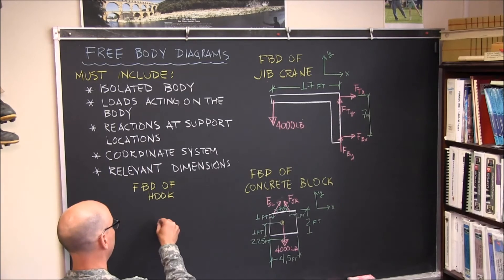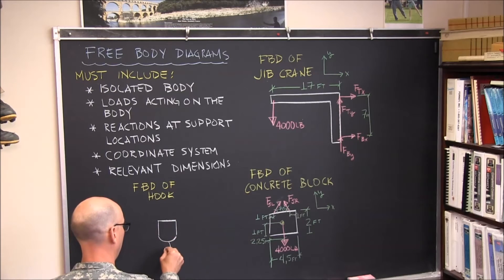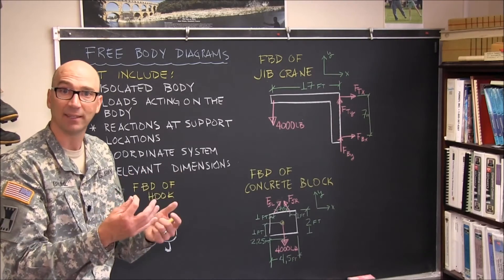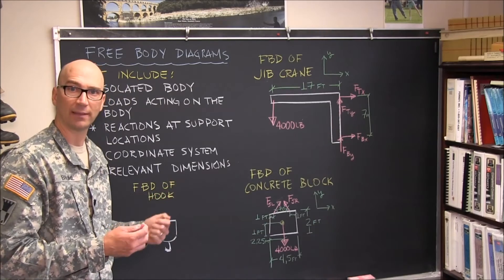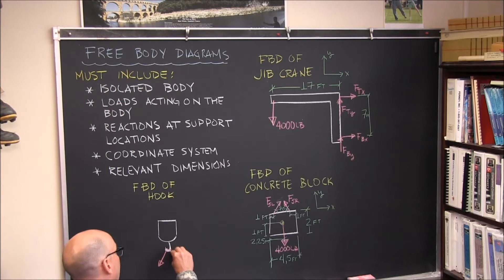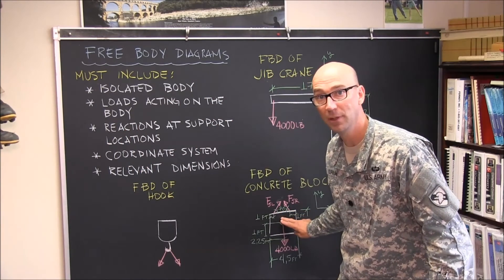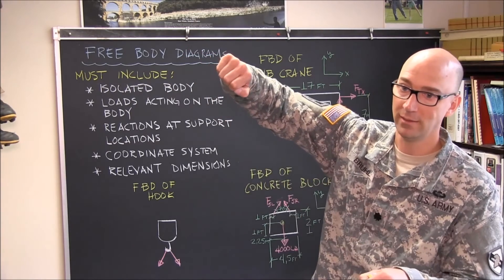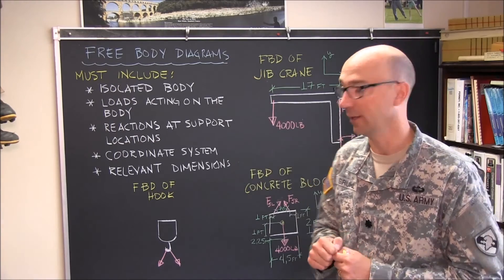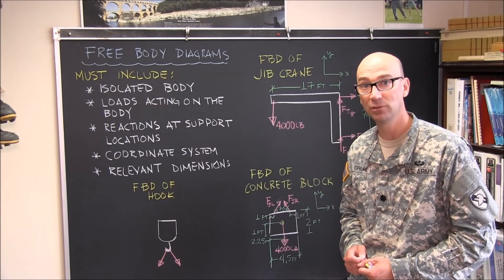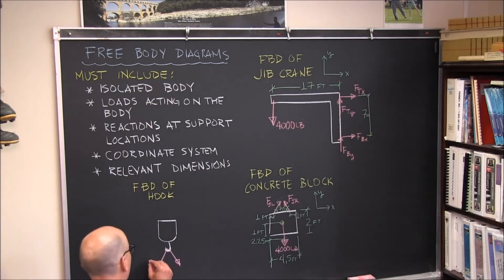Again we will isolate the body from its surroundings — and that's what the object itself looks like. We've already discussed briefly what it's going to have acting on it. If we talk about loads acting on this, those straps are the loads in this case, pulling down on the hook. Now why is it pulling down on the hook when I said it was pulling up on the concrete block? Well, that all has to do with Newton and equal and opposite forces. If we have a cable being pulled on one end, it's going to be pulled in the opposite direction on the other end. The magnitude of these two forces is the same, so we can actually use the same labels: the force in the strap on the left and the force in the strap on the right.